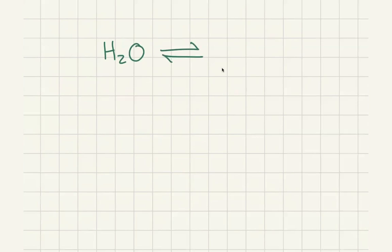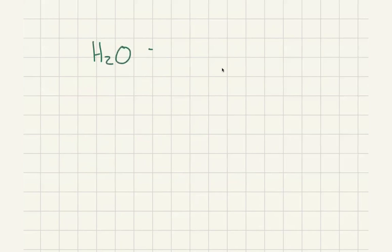Let's stop ignoring water for a minute, because it's going to help us understand what's going to happen in the case of a base. We have our water and it has an ionization equilibrium. Basically what you have is that water can dissociate into H⁺ and OH⁻. We've been ignoring water, but now let's think about it more explicitly because it's going to come into play when we're talking about bases.